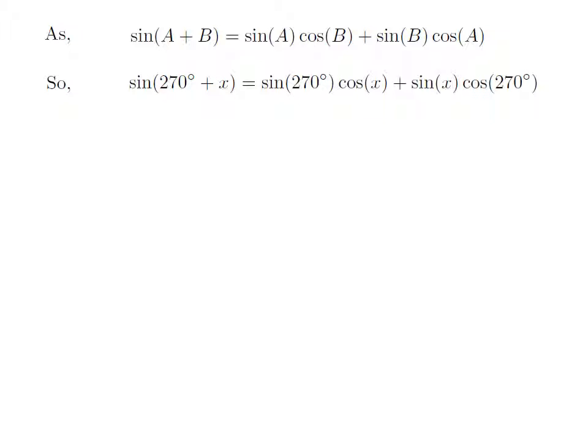Let us apply the above identity to sine of 270 degree plus x, where a is 270 degree and b is x. So, sine of 270 degree plus x is equal to sine of 270 degree into cosine of x plus sine of x into cosine of 270 degree.